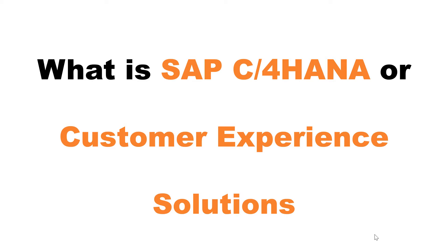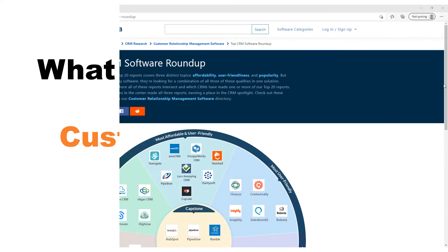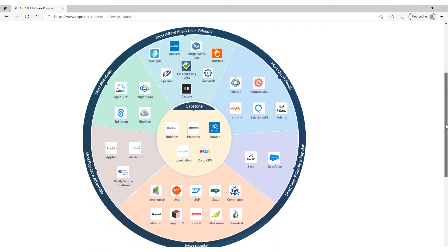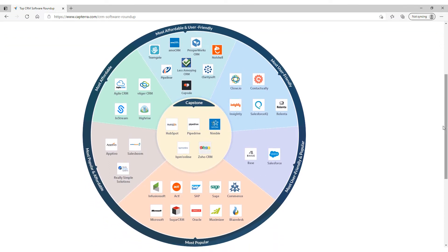CRM software like C4HANA offers companies the latest technologies to manage end-to-end customer relationship processes. Out of the vast number of options, few vendors dominate the CRM market share: Salesforce, SAP, Oracle, Adobe, and Microsoft. The image shown in the video was created by Capterra and, though a bit outdated, provides a good overview of different CRM software segments available today.